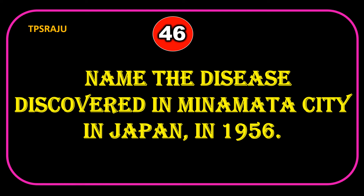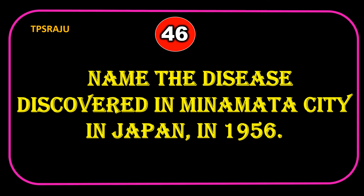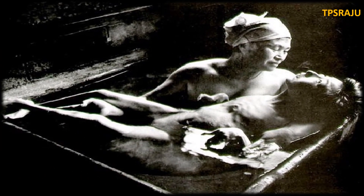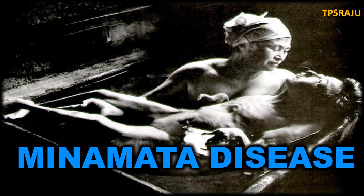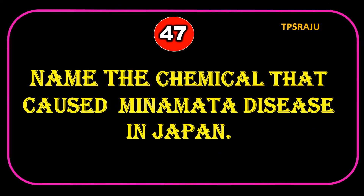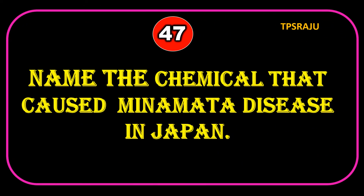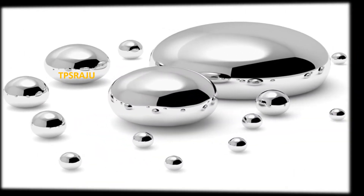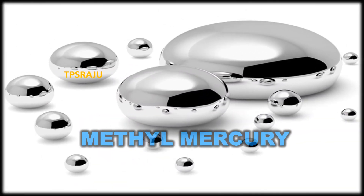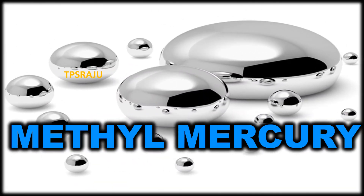Name the disease discovered in Minimata city in Japan in 1956: Minimata disease. Name the chemical that caused Minimata disease in Japan: methyl mercury.